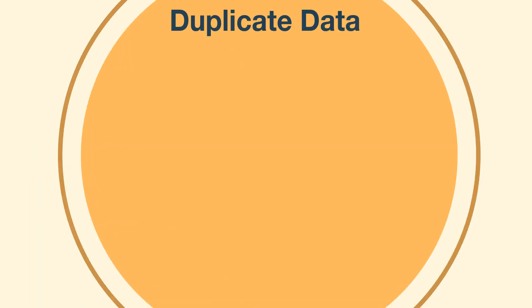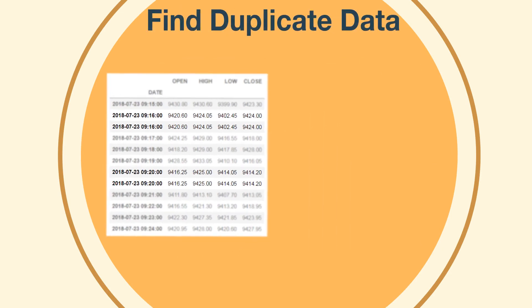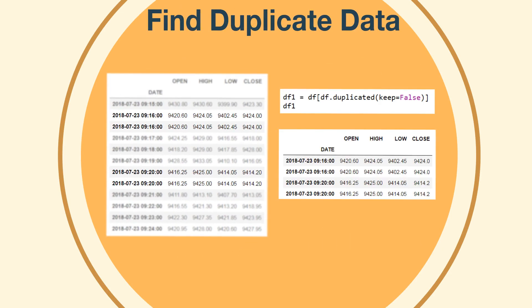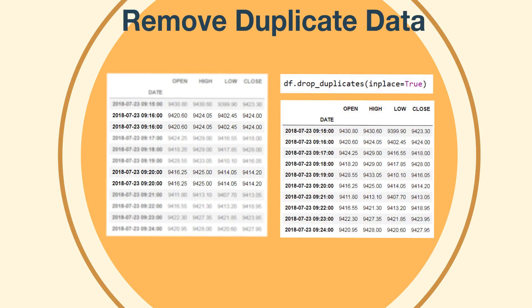Duplicate data means the same data values getting repeated for certain timestamps. In Python, we can detect the occurrence of duplicate timestamps using the duplicated method, and remove them using the drop_duplicates method.